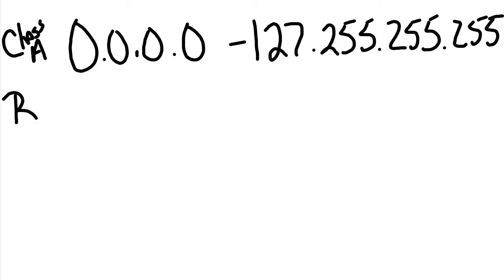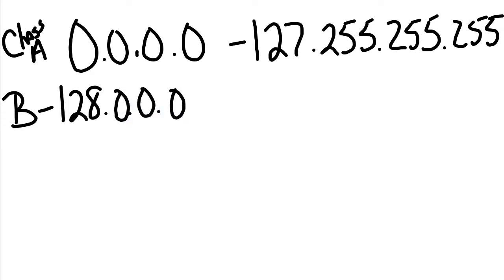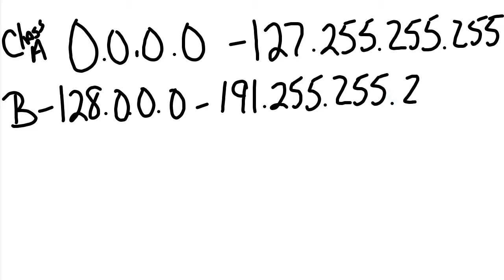Class B addresses are half the size of Class A, representing a quarter of the entire pie. The networks were a lot smaller but there were more of them — every network had fewer hosts, but there were many more networks in Class B. The Class B range goes from 128.0.0.0 through 191.255.255.255.